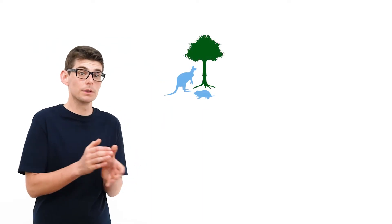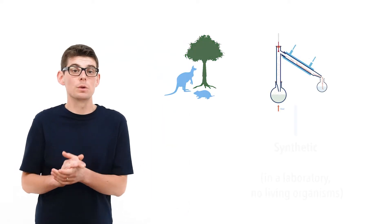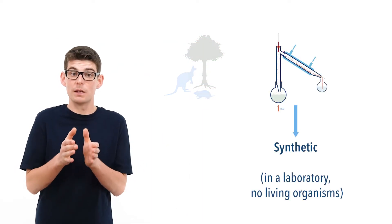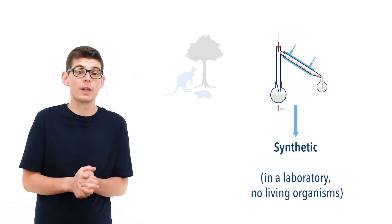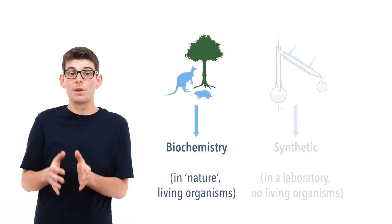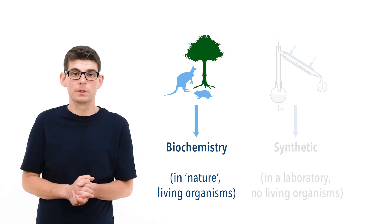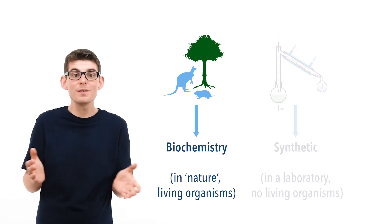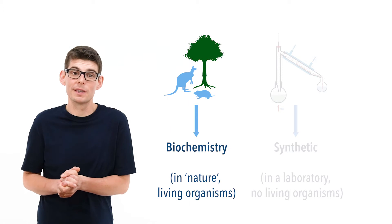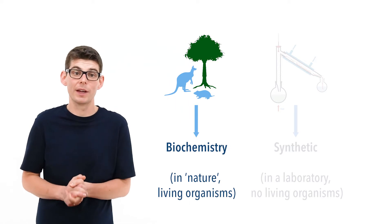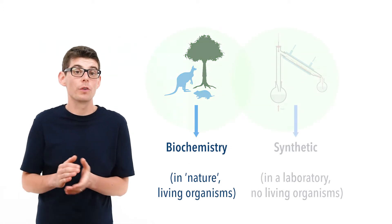Two main branches of organic chemistry then developed to help separate organic molecules that are from organisms and those that aren't. Synthetic organic chemistry, which is the making of organic compounds in a laboratory, and biochemistry, which is the study of organic compounds and the reactions in living organisms. Even today there isn't always a clear distinction between the two — they can and do often overlap.